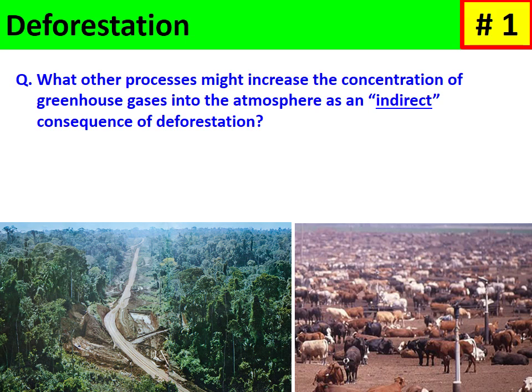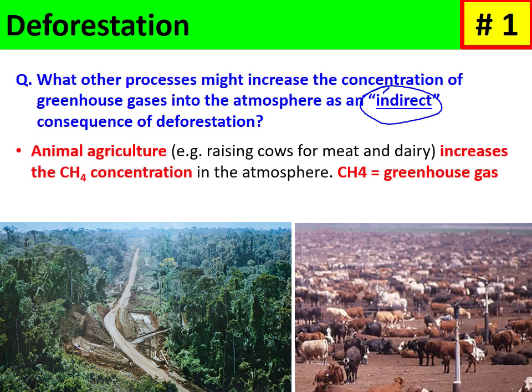Indirectly, deforestation also increases other greenhouse gases. Land cleared by deforestation is often used for animal agriculture, such as raising cows for the meat and dairy industries. Cows release methane as a waste gas, and methane — like carbon dioxide — is a greenhouse gas that reflects infrared light back to the Earth's surface, contributing to the heating of the Earth and climate change.